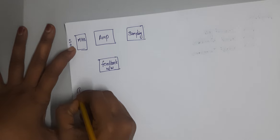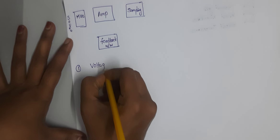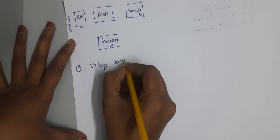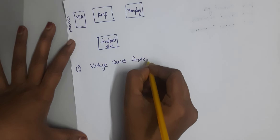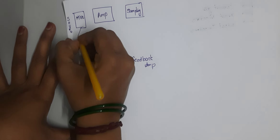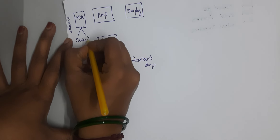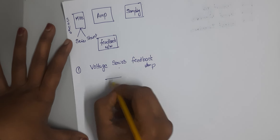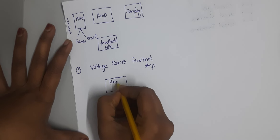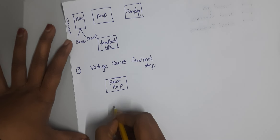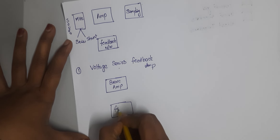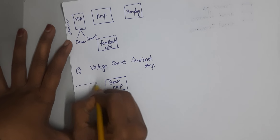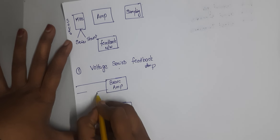The first one is the voltage series feedback amplifier. Generally mixing has two types: series and shunt. In voltage series, the series mixing is at the input port. So we first draw the basic amplifier and feedback network. Here it is series mixing.